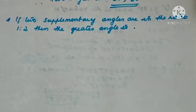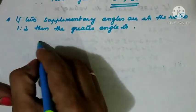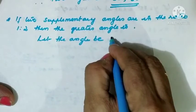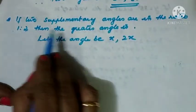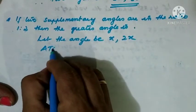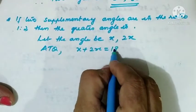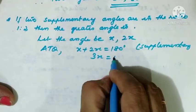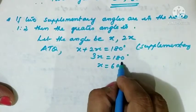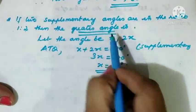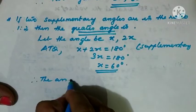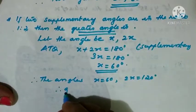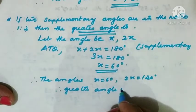If two supplementary angles are in the ratio 1:2, find the greater angle. Let the angles be x and 2x. Since they are supplementary: x plus 2x equals 180 degrees, so 3x equals 180, giving x equals 60 degrees. Therefore the angles are 60 degrees and 2x equals 120 degrees. The greater angle is 120 degrees.